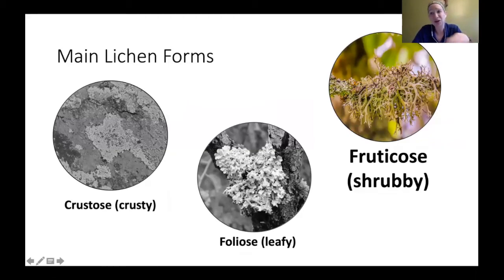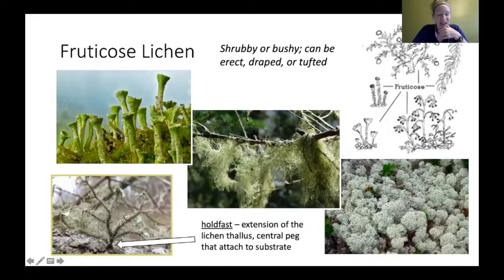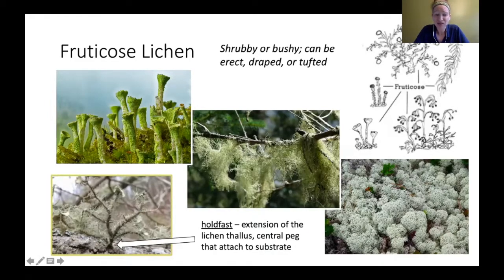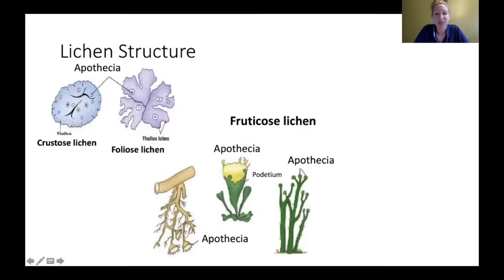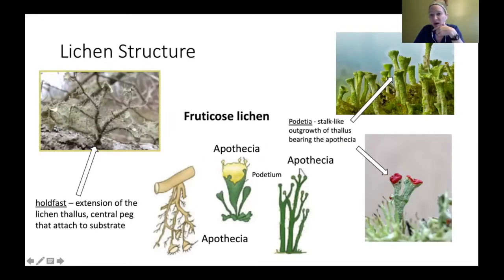The last group is fruticose or shrubby lichen. They tend to be bigger, bushier, and can be erect, draped, or tufted. They don't have rhizines like foliose lichen, but instead a small holdfast — a little peg at the bottom that anchors them to their substrate. Fruiting structures in fruticose lichen tend to be more cup-shaped at the end of a stem rather than flat discs.